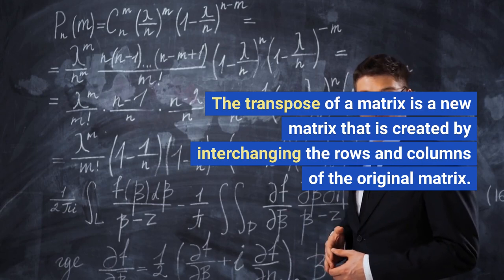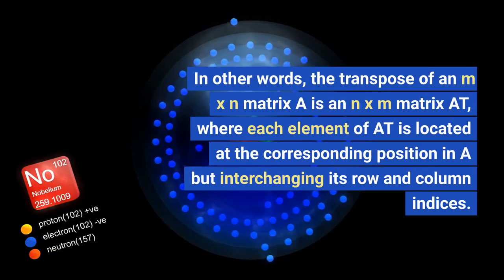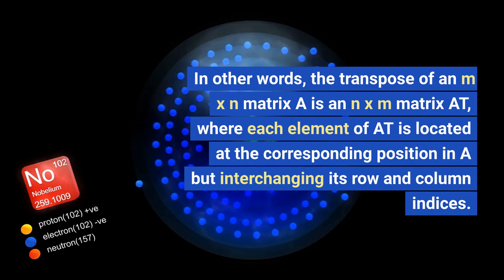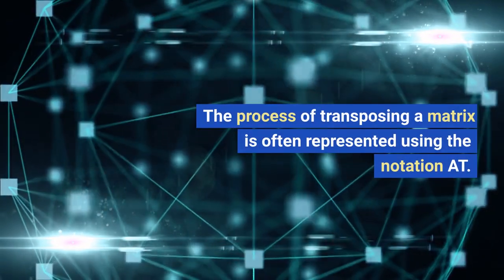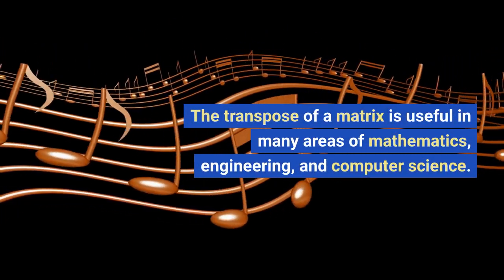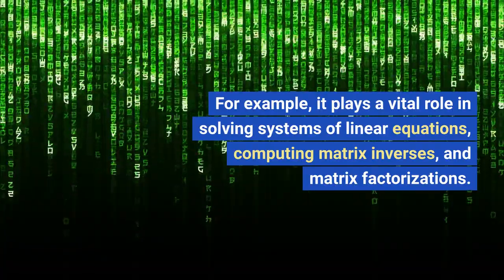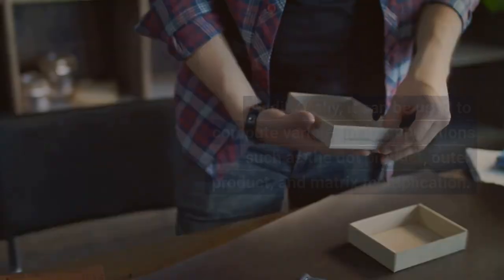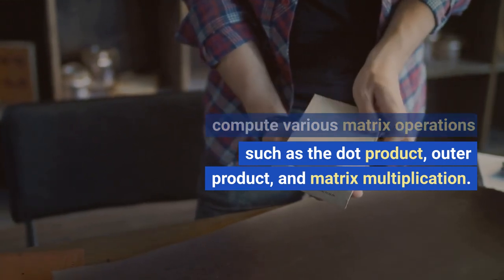The transpose of a matrix is a new matrix created by interchanging the rows and columns of the original matrix. The transpose of an M×N matrix A is an N×M matrix AT, where each element of AT is located at the corresponding position in A with its row and column indices interchanged. The transpose is useful in many areas including solving systems of linear equations, computing matrix inverses, and matrix factorization. It can also be used to compute the dot product, outer product, and matrix multiplication.